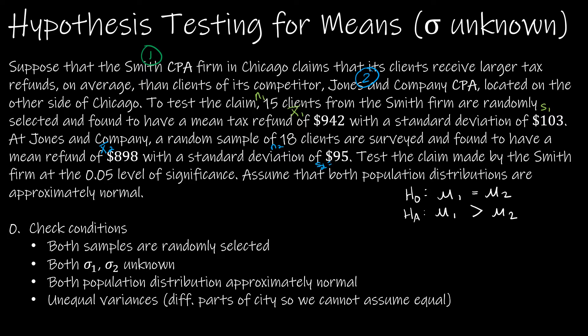That's s two. Test the claim made by Smith firm at the 0.05 level of significance, that's alpha. Assume that both population distributions are approximately normal. So we have everything we need.